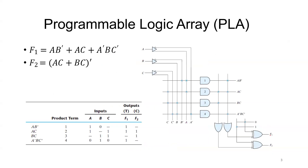We can see one example given in sum-of-product form: F1 = AB' + AC + A'BC' and F2 = (AC + BC)'. If the expression is given in minterms, you should simplify using K-map to obtain this form. The common product term AC appears in both F1 and F2, so it is taken only once. The product terms are: AB', AC, A'BC', and BC.